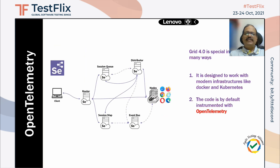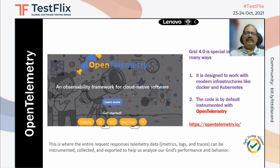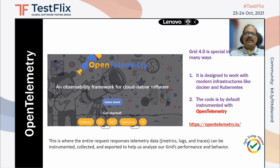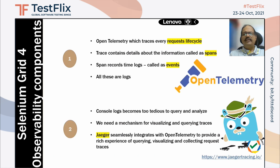Grid 4 is special because it allows us to do traceability using something called OpenTelemetry. By default, it has been instrumented with OpenTelemetry — a framework which allows you to look at all the request/response log files, look at the events, the spans, and look at the performance — all of that.